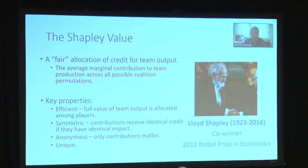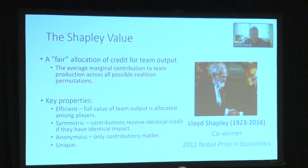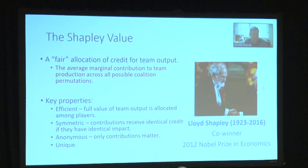This all begins with the Shapley value, named after Lloyd Shapley, the 2012 Nobel Prize co-winner in economics. The award was largely for his work in coalitional game theory, in particular the Shapley value. The Shapley value calculates a fair allocation of credit for a person for their contribution towards a team. Specifically, it calculates the average marginal contribution to team production across all possible coalition permutations — all possible ways the team can be constructed.